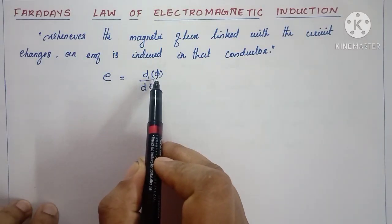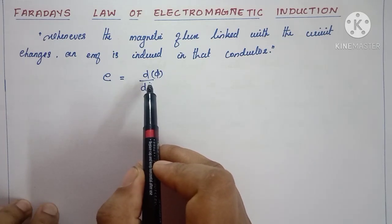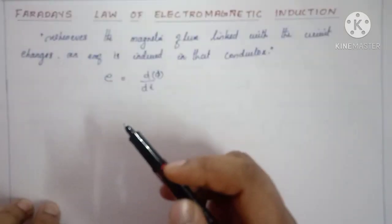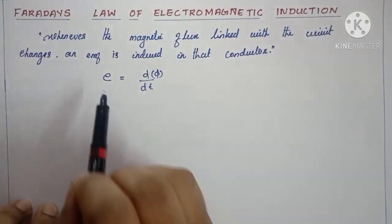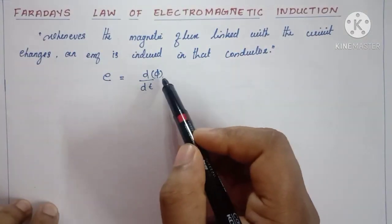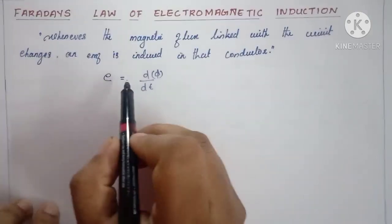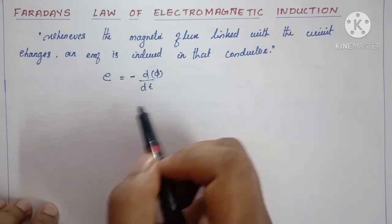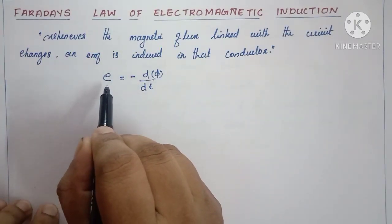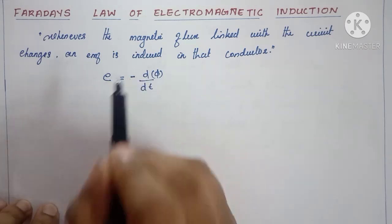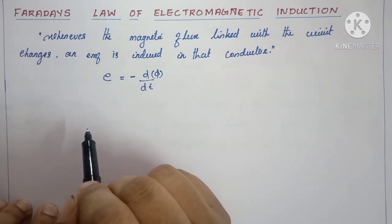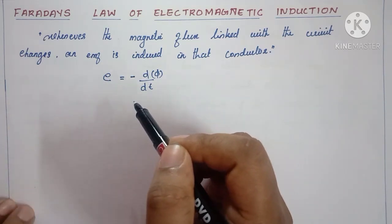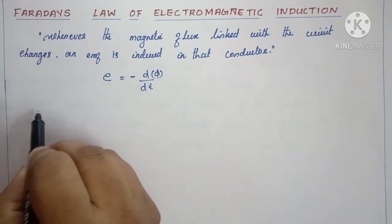By Lenz's law, the induced EMF will always oppose the cause of producing the EMF. Here the cause is the rate of change of magnetic flux, so we give a negative sign because the induced EMF opposes the cause of producing it. The induced EMF is normally a dynamically induced EMF.